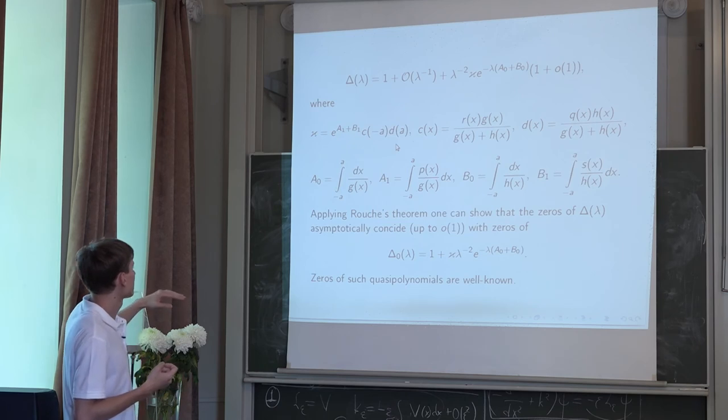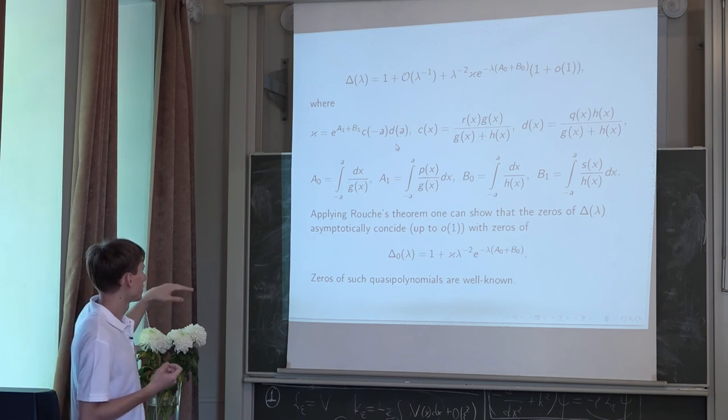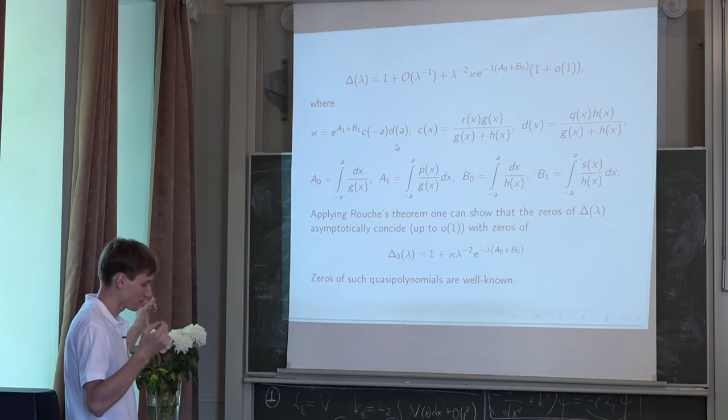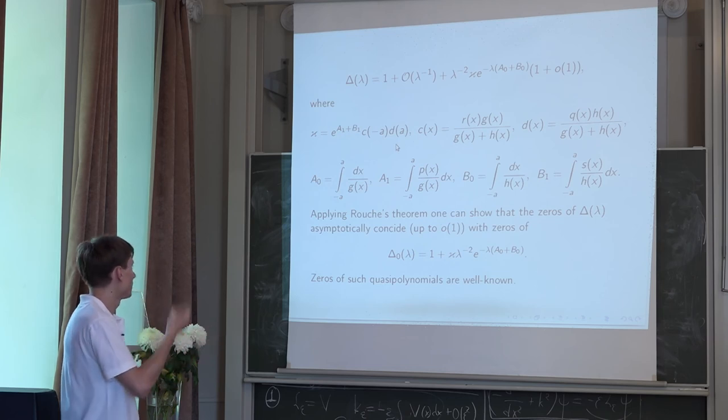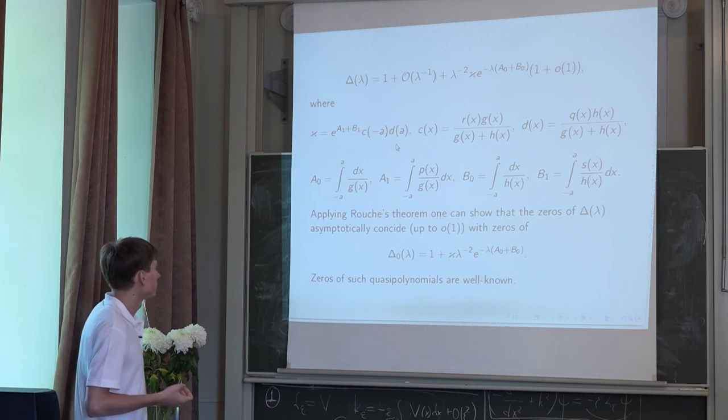And by the Plancherel-Crockett theorem, we can go from delta(lambda) to delta_0(lambda) in the sense that zeros of delta_0(lambda) are asymptotically coincide up to small o of 1 with zeros of this new quasi-polynomial.